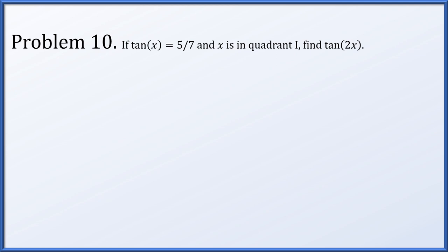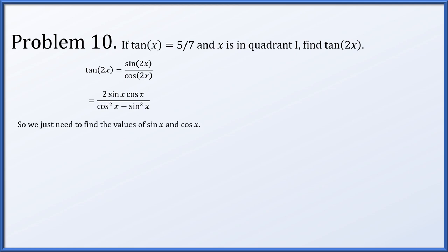Last, in problem 10, if the tangent of x is 5 sevenths and x is known to be in quadrant 1, let's find the tangent of 2x. The tangent of 2x will be the sine of 2x over the cosine of 2x. The sine of 2x is 2 sine x cosine x, and cosine of 2x is cosine squared x minus sine squared x. So all we need to do is find the values of sine x and cosine x.